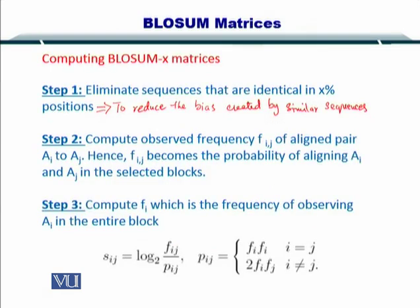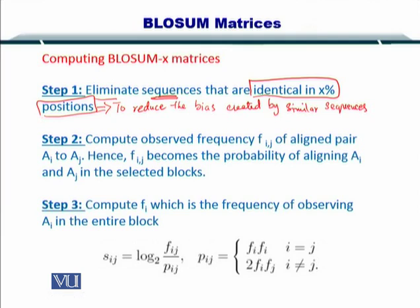To compute the BLOSSOM matrices, the first thing you need to do is eliminate similar sequences in the block — that is, eliminate those sequences that are identical in X percent of positions. We keep only one representative sequence from sequences that are very similar to each other. The X percent essentially means 10%, 20%, 80% similar, and so on. This helps reduce the bias created by similar sequences within the block, because otherwise the scoring matrix will be heavily biased towards those similar sequences.